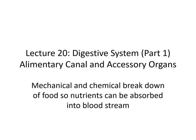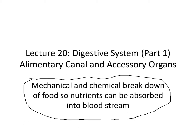So if we can break down the digestive system into a simple sentence, this is probably the minimal statement we can say: the digestive system is the mechanical and chemical breakdown of food so nutrients can be absorbed into the bloodstream. The whole point is for us to get the nutrients from our diet. In order to do that, we have to not only break them down mechanically — so they go from big things to little things — but also chemically break them down so that we can absorb them through the bloodstream.